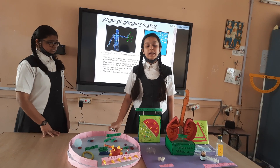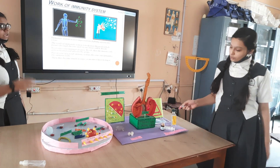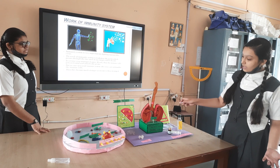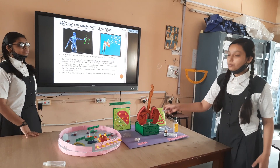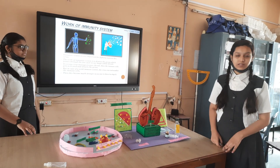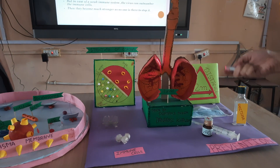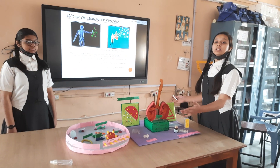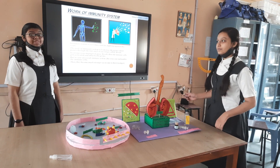The immune system is very important to fight against this virus. As you can see, the lungs are divided into many sections which we call lobes. When you breathe, the air moves freely through the windpipe and then travels through large tubes called bronchi, then through the smaller tubes called bronchioles, and finally enters the tiny cells called alveoli. In case any germ manages to pass the alveoli, the immune system gets activated and attacks the germs. But in case of a weak immune system, the virus can outnumber the immune cells and the virus gets much stronger if no one is there to stop it.